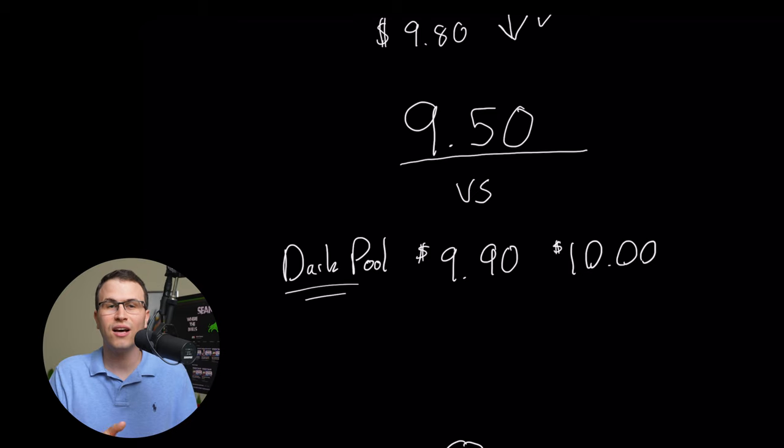But if you sold all 1 million shares on the dark pool with the same starting price at $10, you could sell all your shares in 10,000 shares or more blocks for let's say $9.90 to $10 range over time.